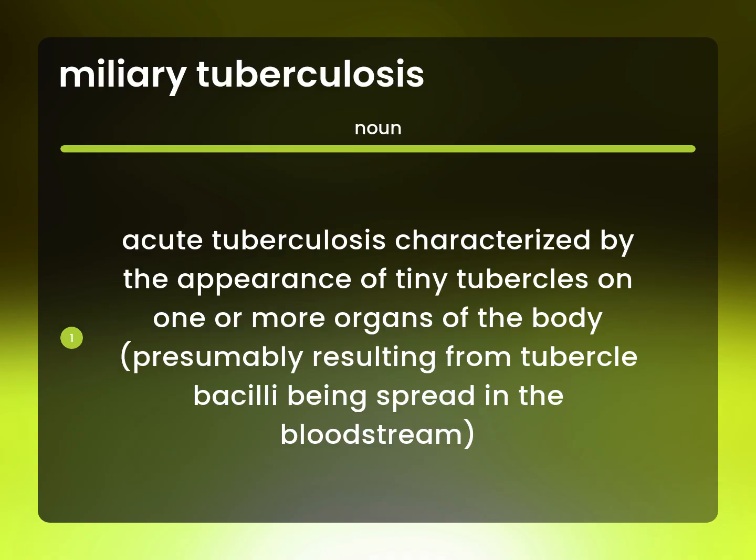Acute tuberculosis characterized by the appearance of tiny tubercles on one or more organs of the body, presumably resulting from tubercle bacilli being spread in the bloodstream.